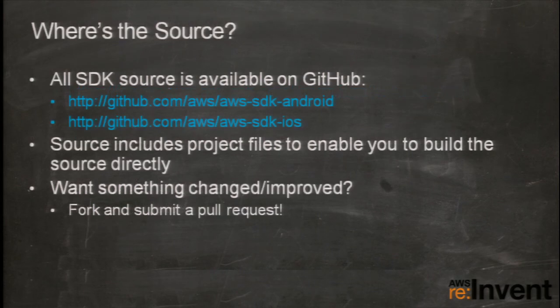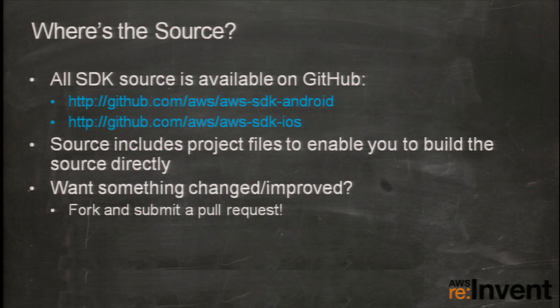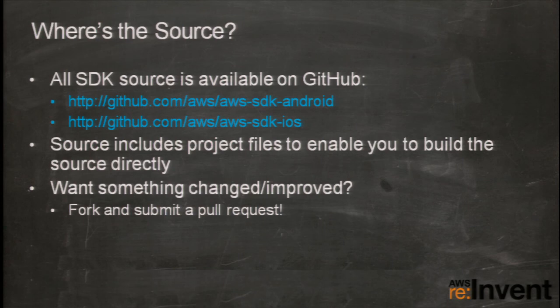Don't hesitate to get onto the forums and ask us a question — we are here to help. The source is available as an open source project on GitHub; any time we make a release, we update the repository. We also provide a build script so you can build the SDKs yourself if needed — for running an older iOS version, making changes, or fixing issues. If you find an issue, feel free to fork our repository and submit a pull request; we've incorporated community contributions into the SDK. We also have blog posts walking through how to build both SDKs.